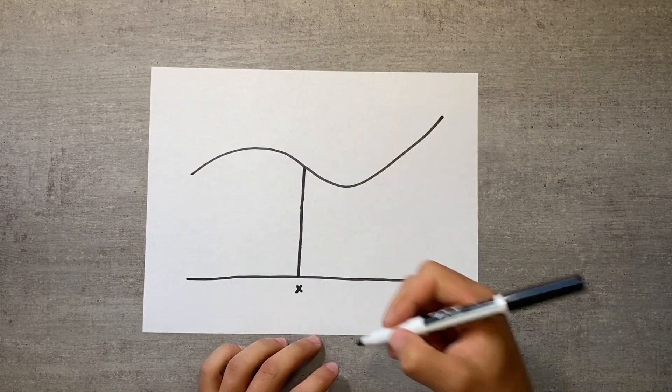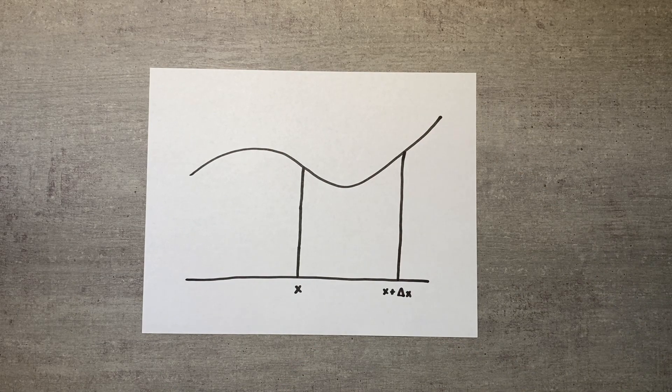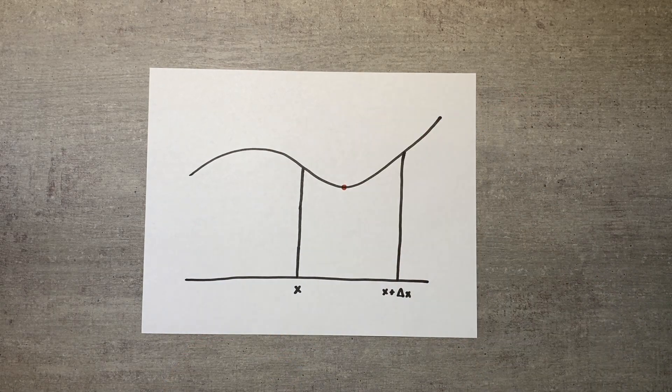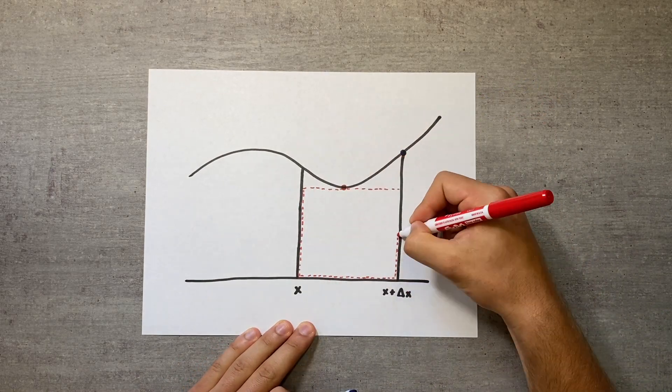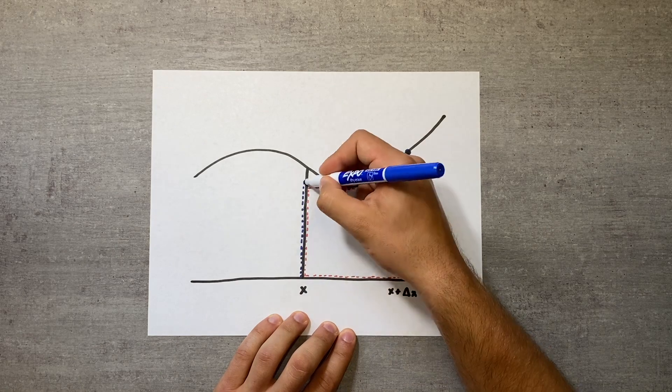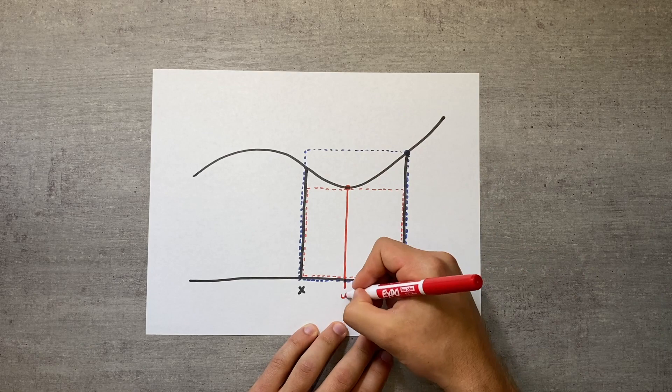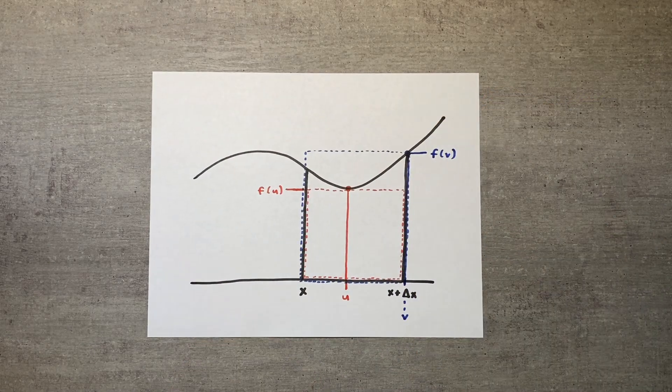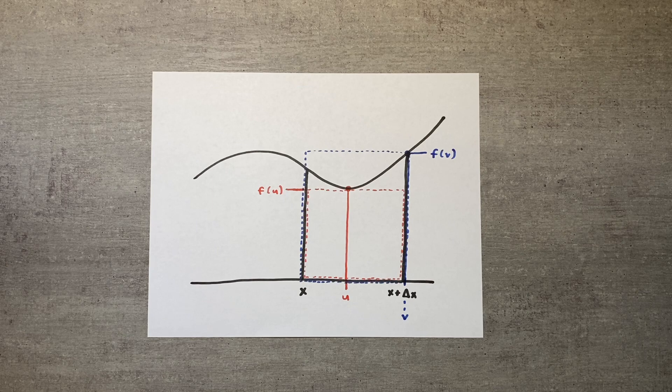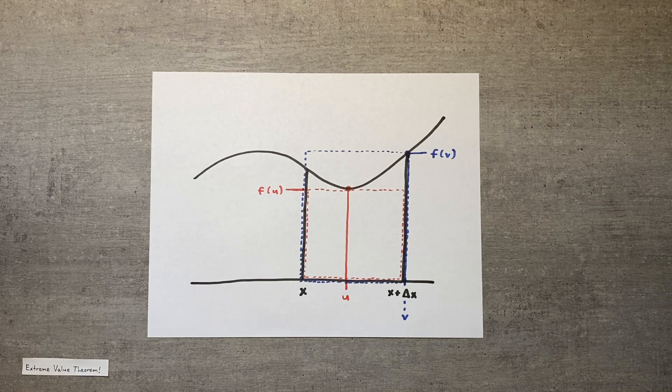We begin with the same setup as proof 2, but take a closer look at the change in area. Instead of creating a single rectangular approximation using the height of f at x, let's create two rectangles, one using the minimum value of f between x and delta x, and one using the maximum value. We'll call the location of the minimum u and the location of the maximum v, so the two rectangles have a height of f of u and f of v respectively. We know these values have to exist because of the extreme value theorem.